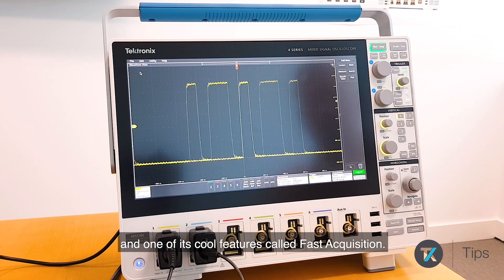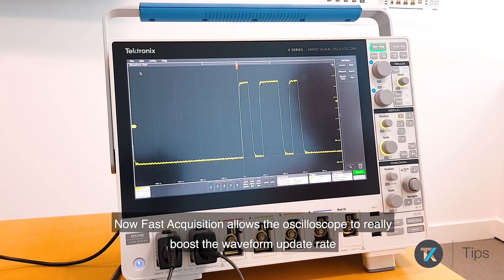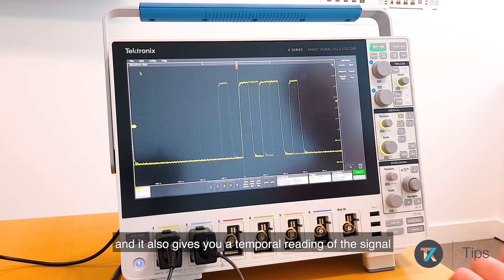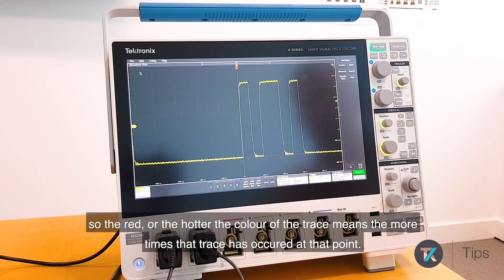Fast Acquisition allows the oscilloscope to boost the waveform update rate and gives you a temporal reading of the signal. The red or hotter the color of the trace means the more times that trace is occurring at that point.